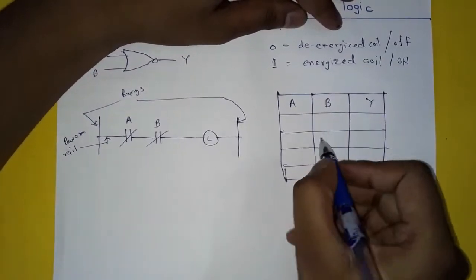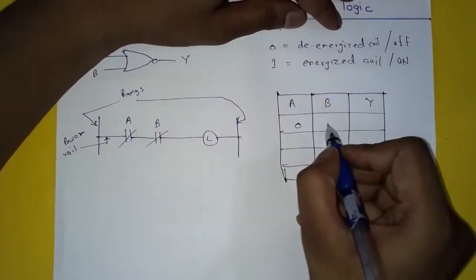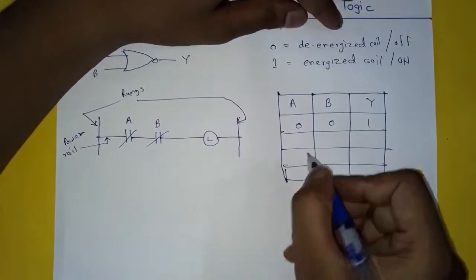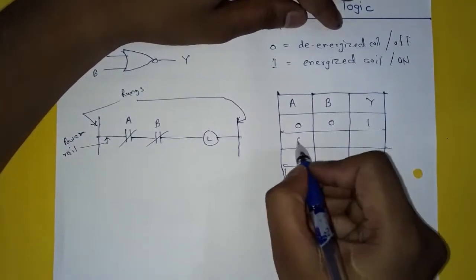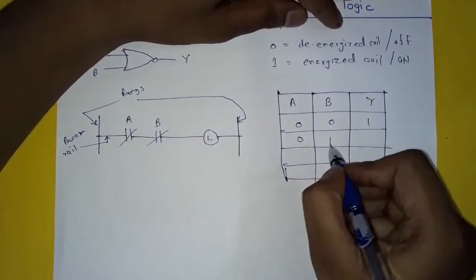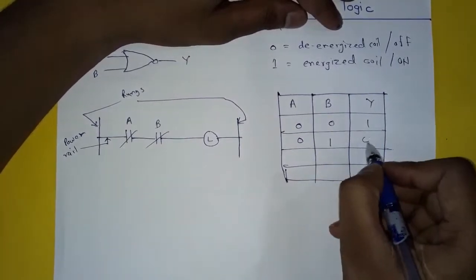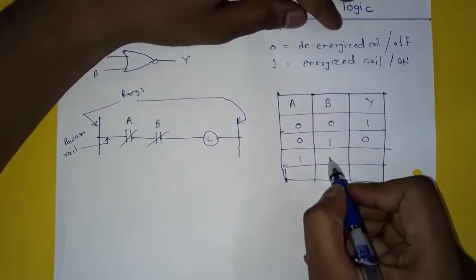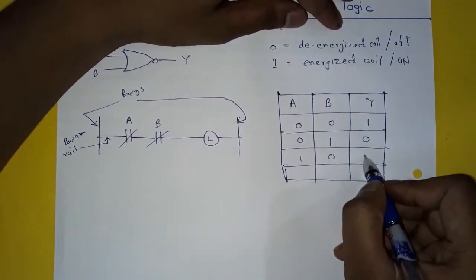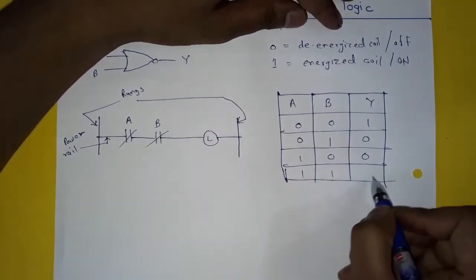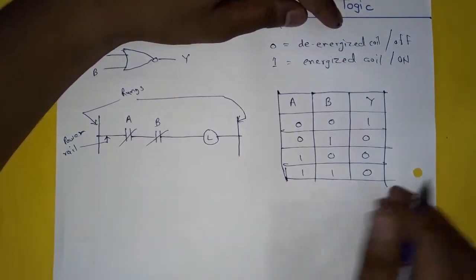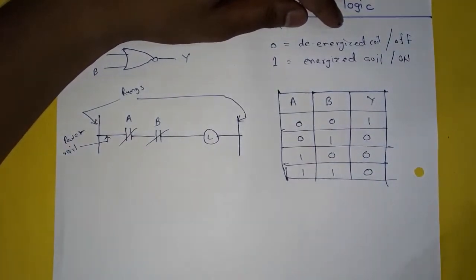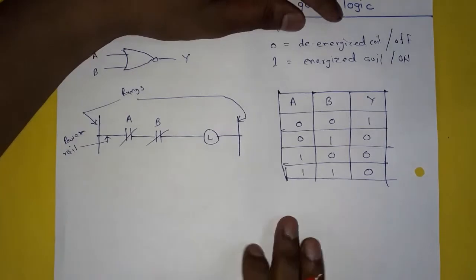Here the first condition is zero, zero, one. The second is zero, one, zero. The third is one, zero, zero. And the fourth condition is one, one, zero.